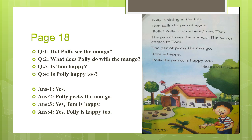Now I have some questions from page 18. Did Polly see the mango? Yes. What does Polly do with the mango? Polly pecks the mango. Very good. Is Tom happy? Yes, Tom is happy. Is Polly happy too? Yes, Polly is happy too. Very good. Because you have read the lesson carefully, you can now answer any question and do any exercise from the story Tom's Parrot.